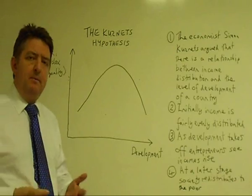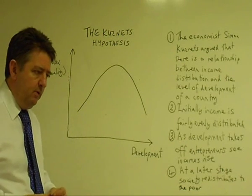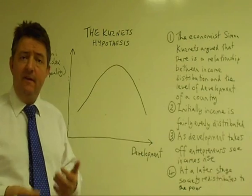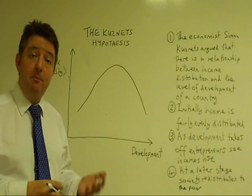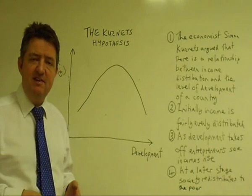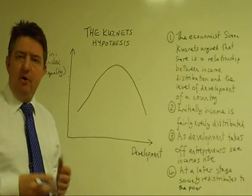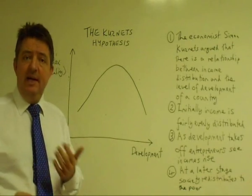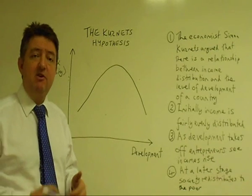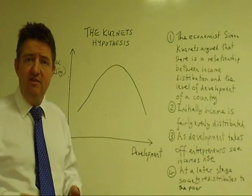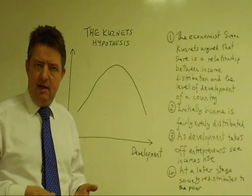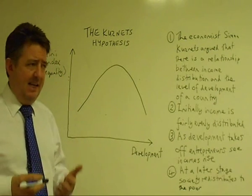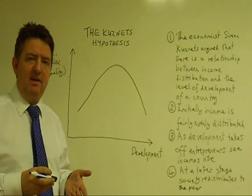If we look at the UK as an example, the UK developed in Victorian times. At that point, there was all the poverty in the cities and the factories, and entrepreneurs became very wealthy. However, in the 20th century, you see the development of old age pensions and the benefits system, and that leads to a reduction in inequality.